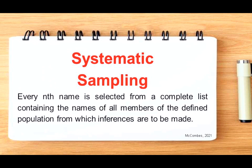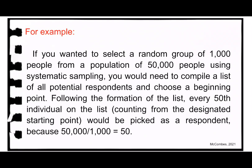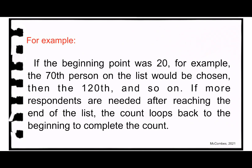Systematic sampling: in this technique, every nth name is selected from a complete list of all members of the defined population. For example, if you wanted to select a random group of 1,000 people from a population of 50,000 using systematic sampling, you would compile a list of all potential respondents and choose a beginning point. Every 50th individual on the list — counting from the designated starting point — would be picked, because 50,000 divided by 1,000 equals 50. If the beginning point was 20, the 70th person would be chosen, then the 120th, and so on. If more respondents are needed after reaching the end of the list, the count loops back to the beginning.